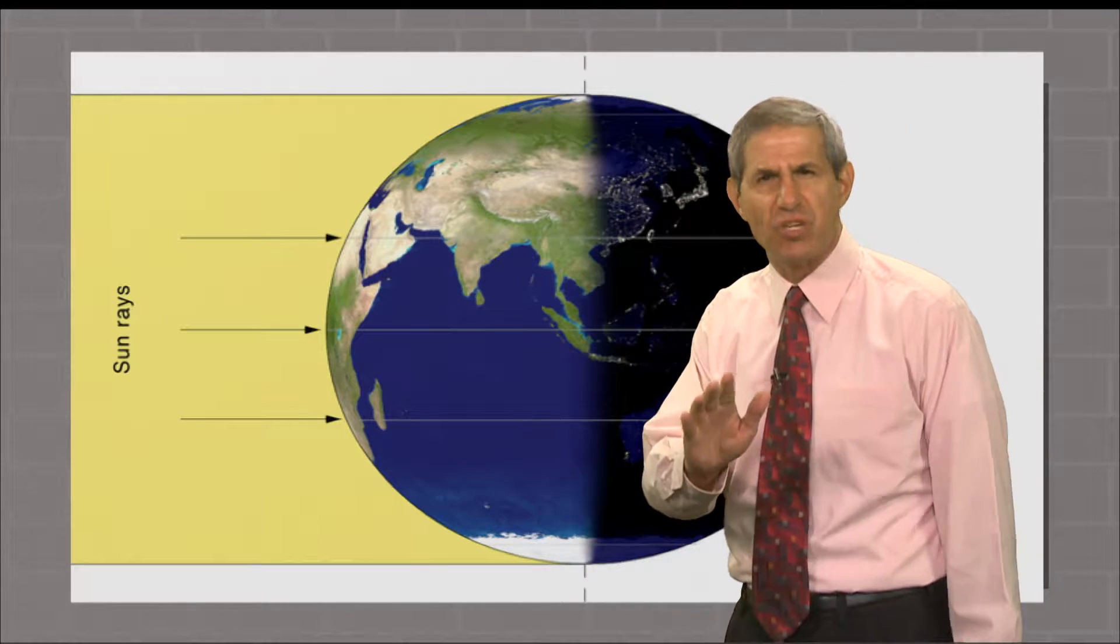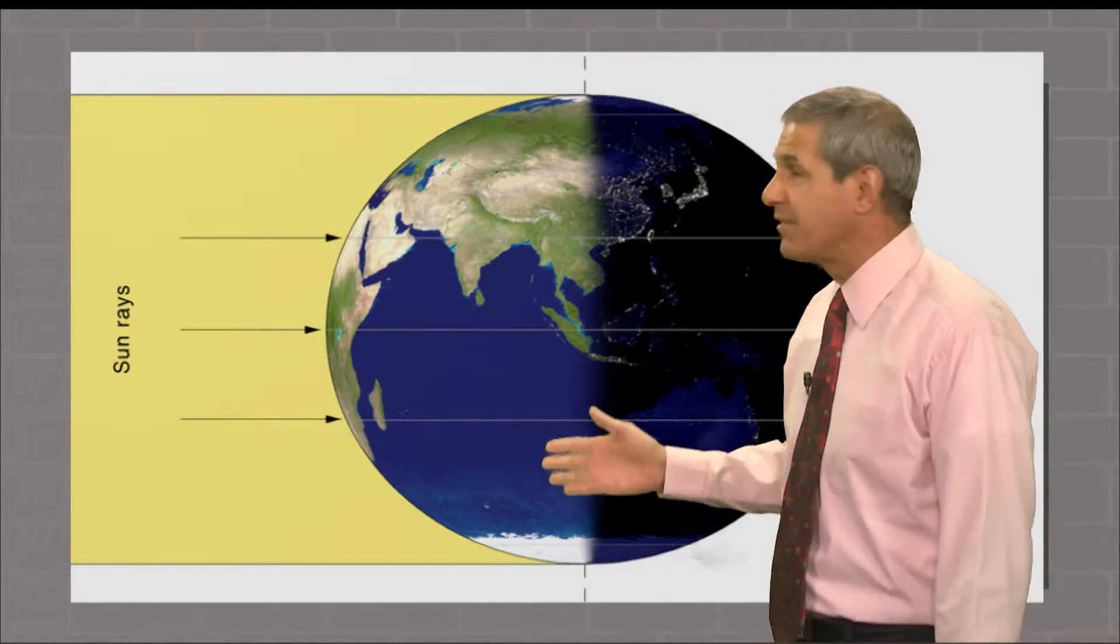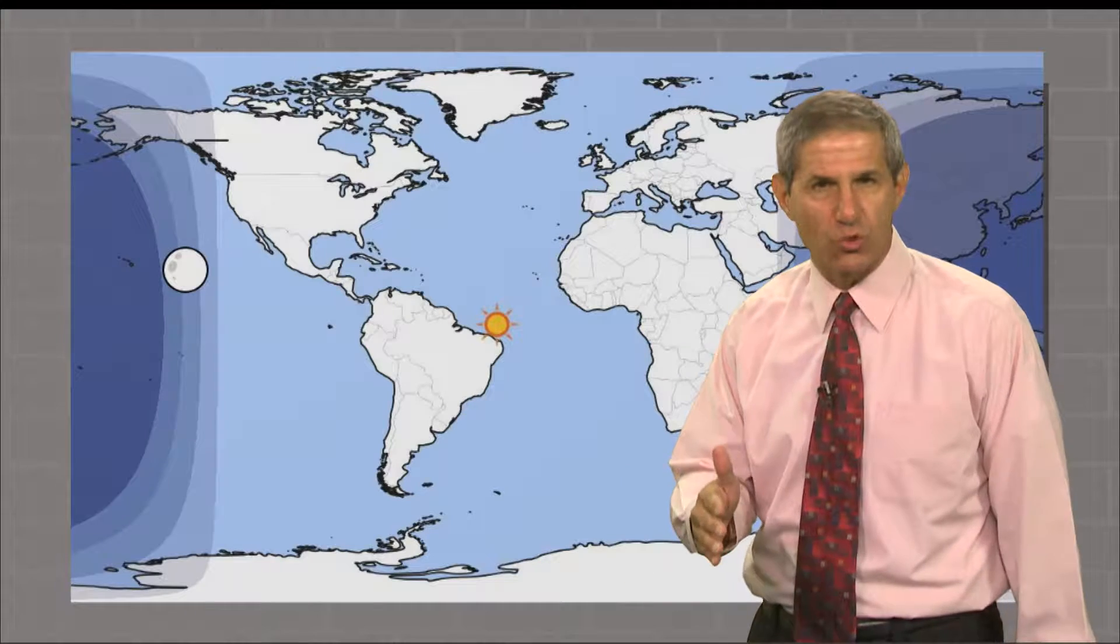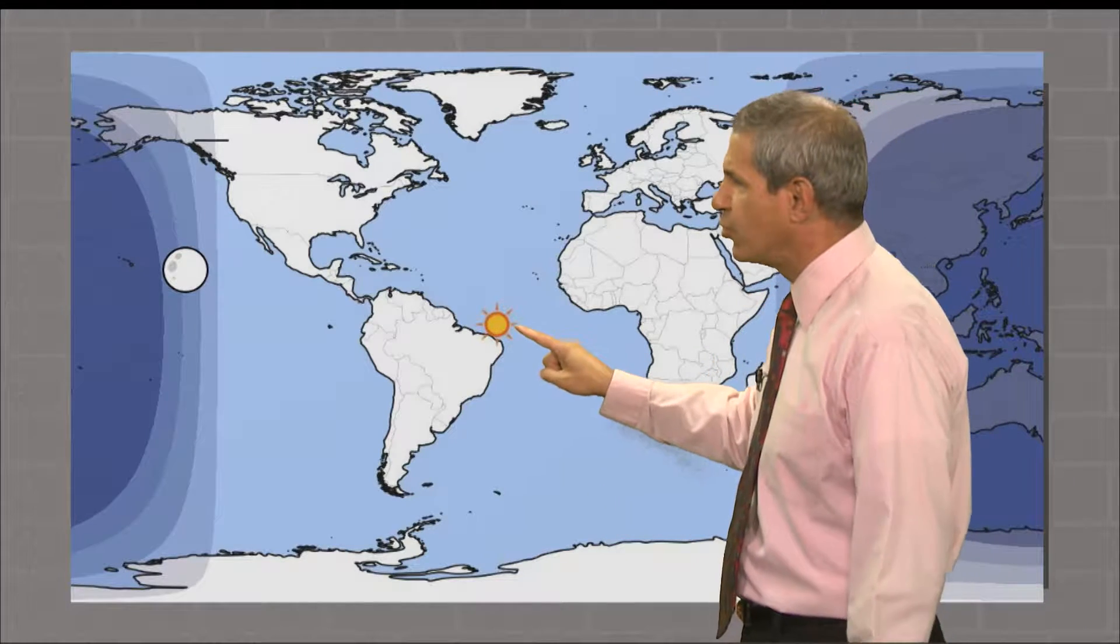As a result, at a specific time on each of those days, the sun will be right overhead at the equator. This year, that happened last Thursday at 10:21 a.m. Eastern Time. The exact point at which the sun was right overhead was just north of the eastern tip of Brazil.